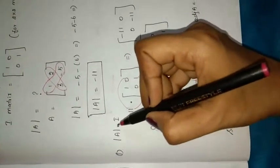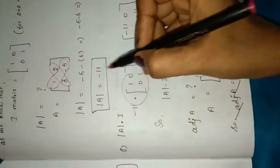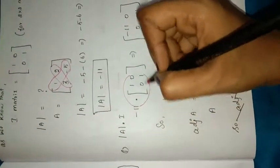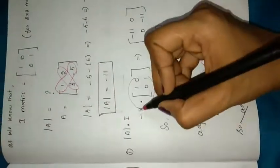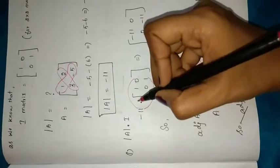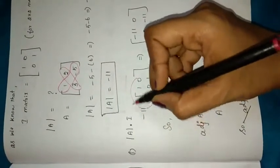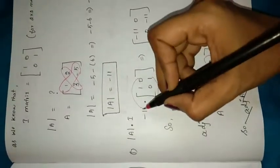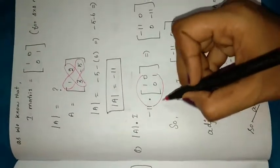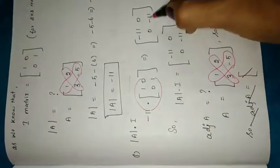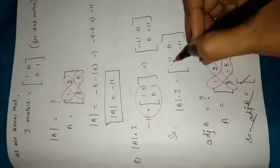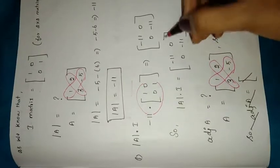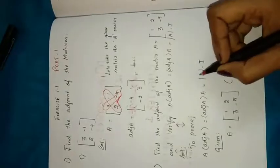Now we multiply |A| with I. We found |A| = minus 11, which is multiplied with the identity matrix [[1, 0], [0, 1]]. Multiplying minus 11 with each element: minus 11 × 1 = minus 11, minus 11 × 0 = 0, minus 11 × 0 = 0, minus 11 × 1 = minus 11. So |A| × I = [[-11, 0], [0, -11]].